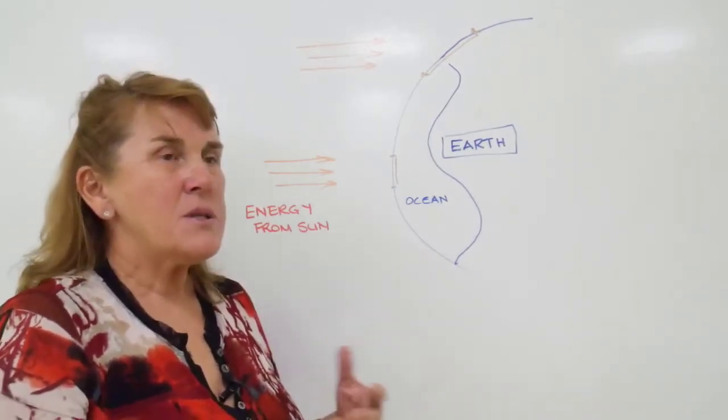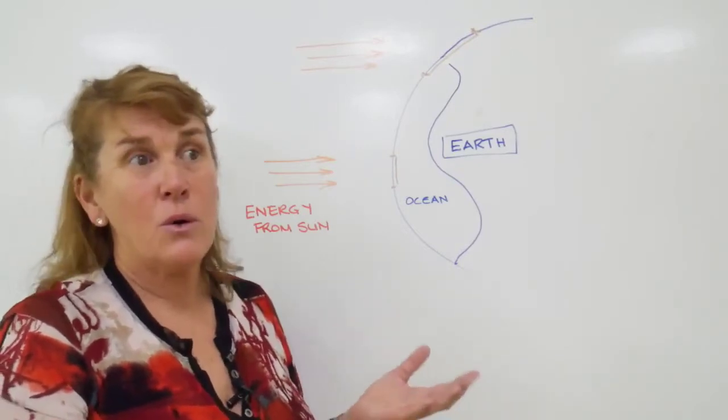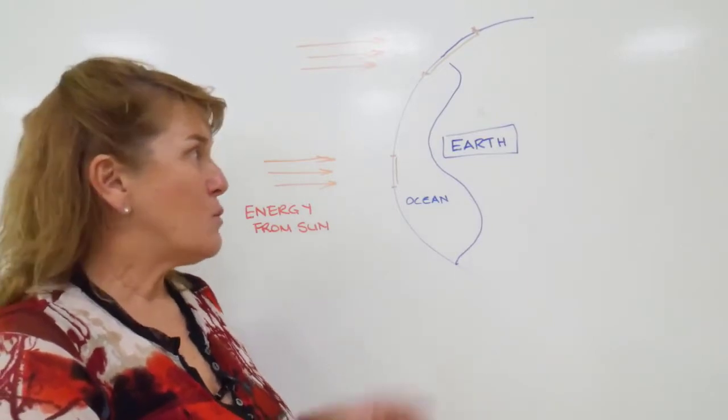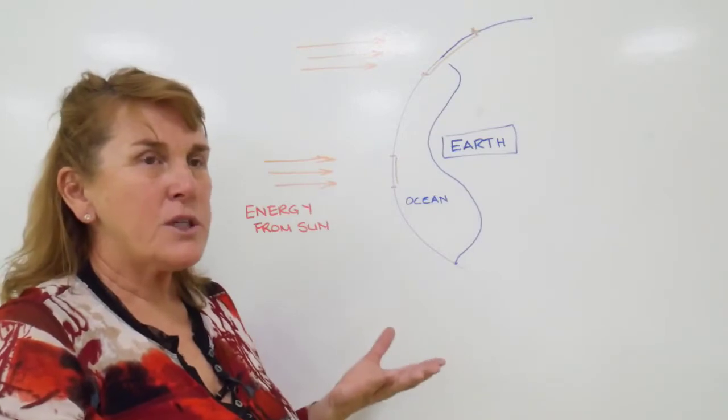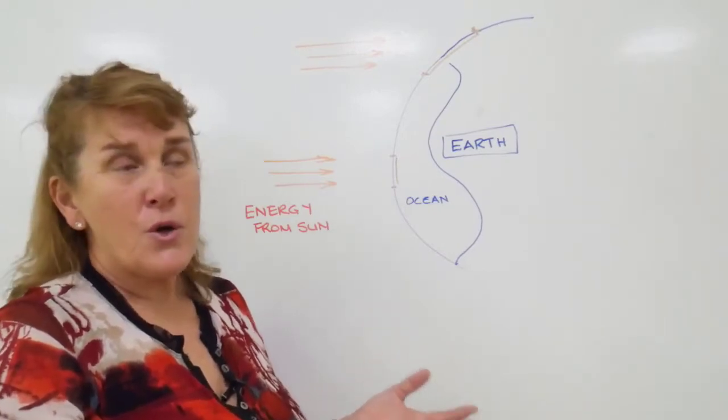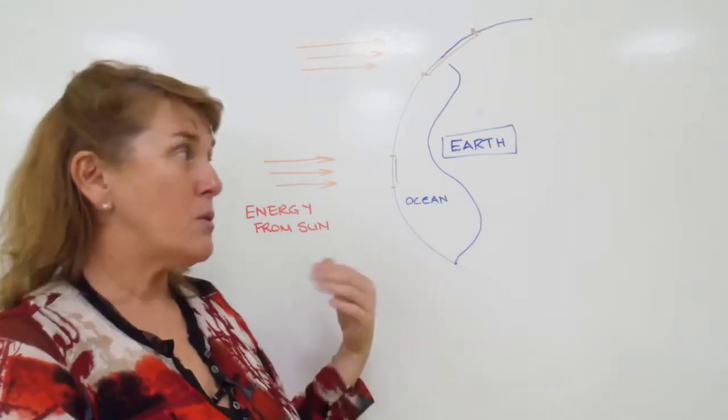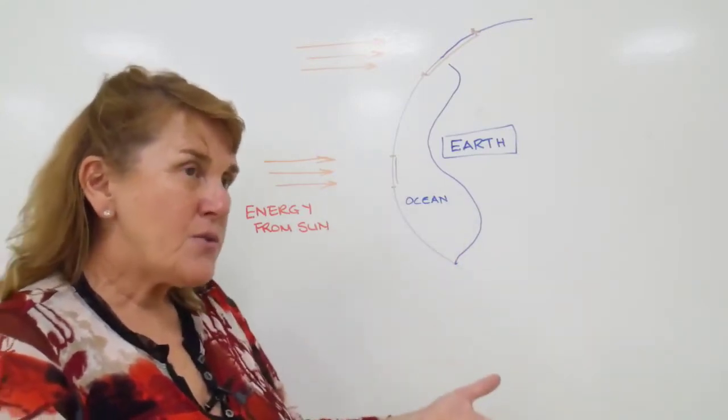We can think about this as part of the process that drives the water cycle, or the hydrologic cycle. What happens is energy from the sun evaporates water from the earth's surface—from lakes, dams, rivers, and ponds, but of course from the ocean.